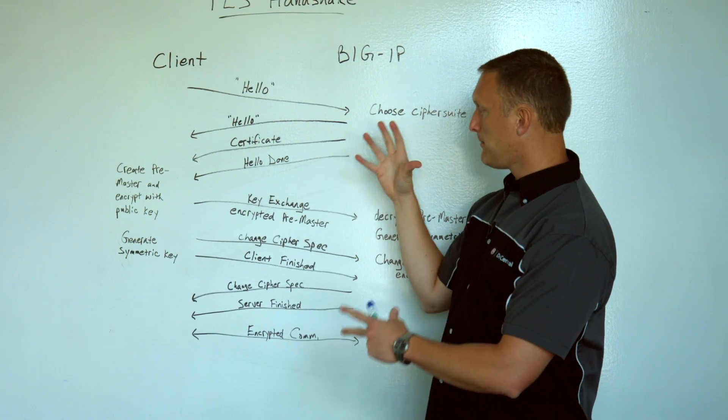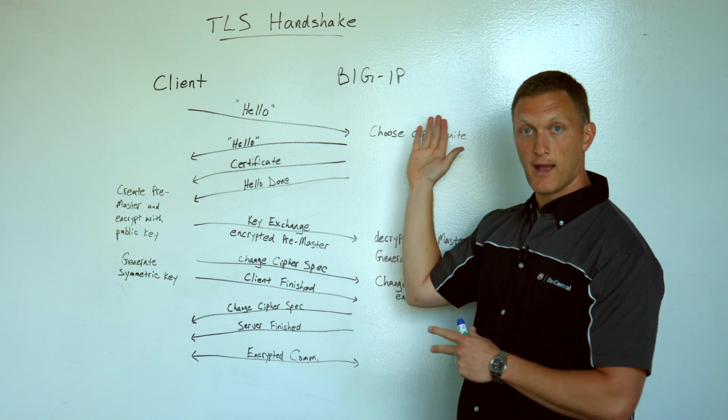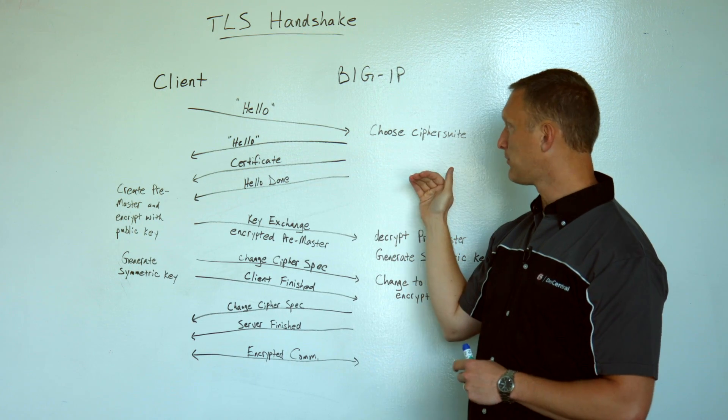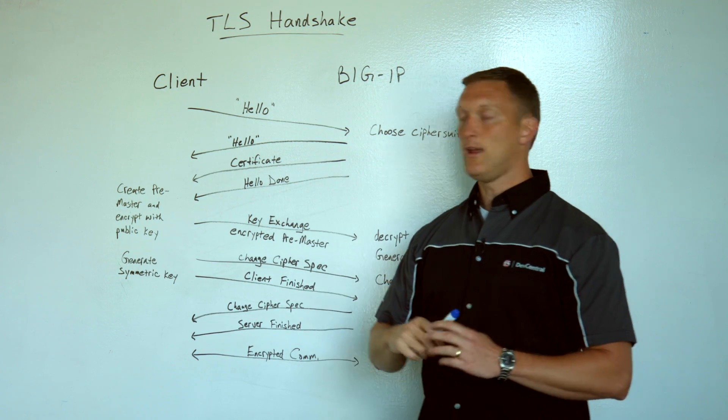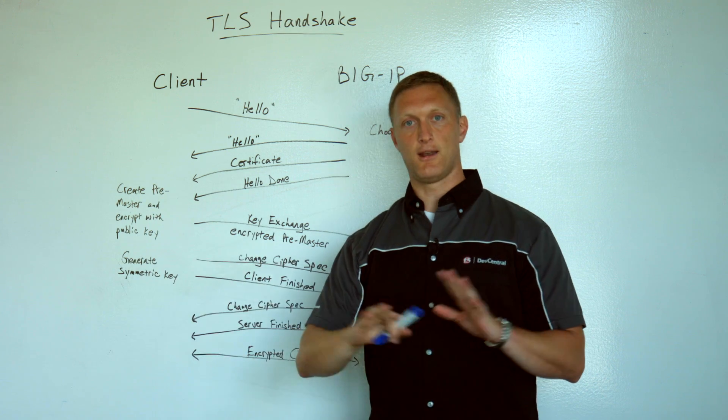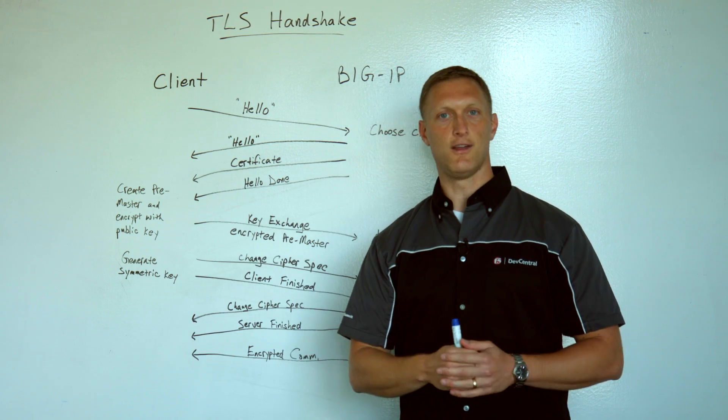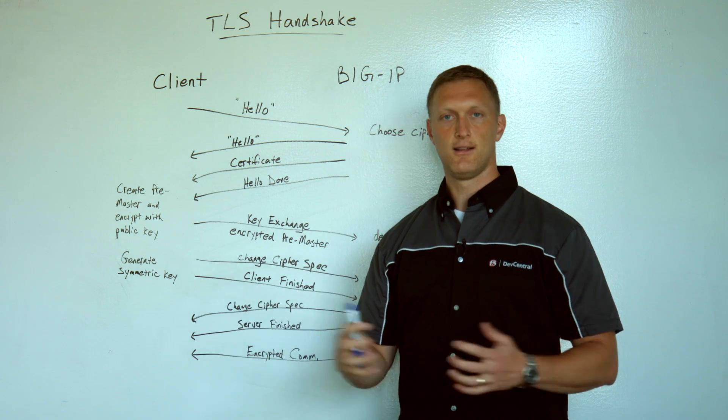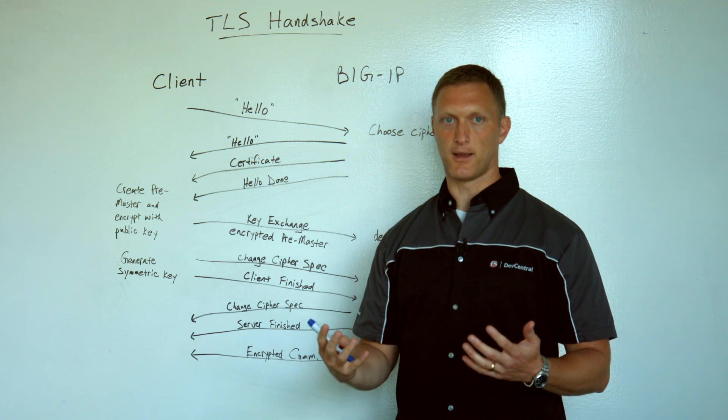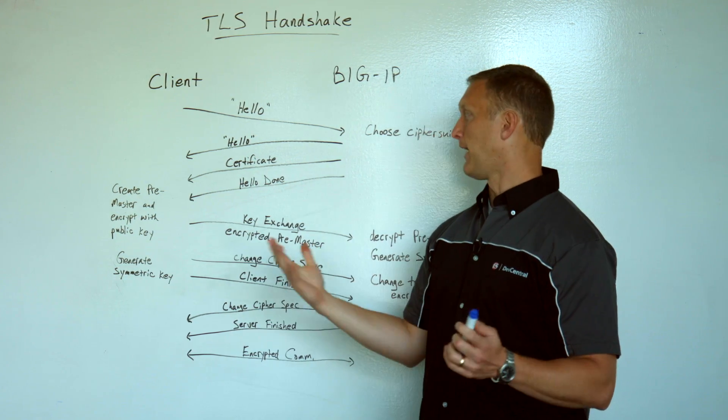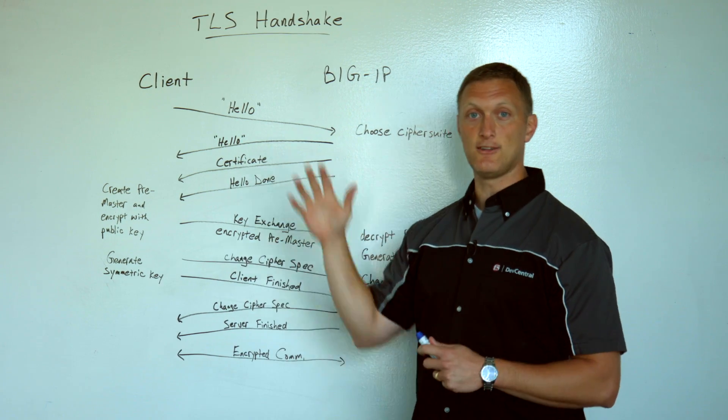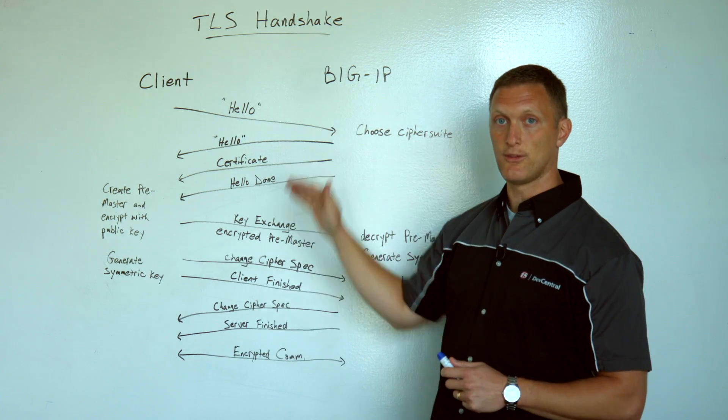I hope you can take this and maybe if you need to reconfigure your BIG-IP with some of your cipher suite listings, or if you need to go out to your clients and say, hey, I'm going to stop supporting your legacy encryption methods just because I can't afford to do that from a risk perspective anymore. You do what you got to do, but at least you understand hopefully how this whole thing works.